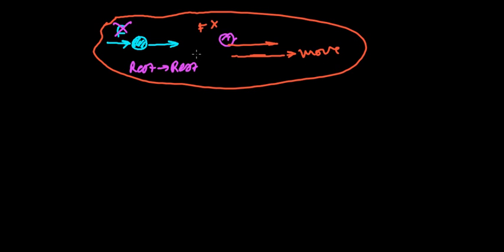But on Earth, if someone is moving, without us applying any force, the object still gets stopped because there are many disturbing factors like air, friction, and more. Don't think that you are not applying force — the environment may be indirectly applying some forces. So you must consider all kinds of forces. If the total of all kinds of forces is zero, then if the object is at rest it will remain at rest, and if it is moving it will keep moving. This is Newton's first law of motion.